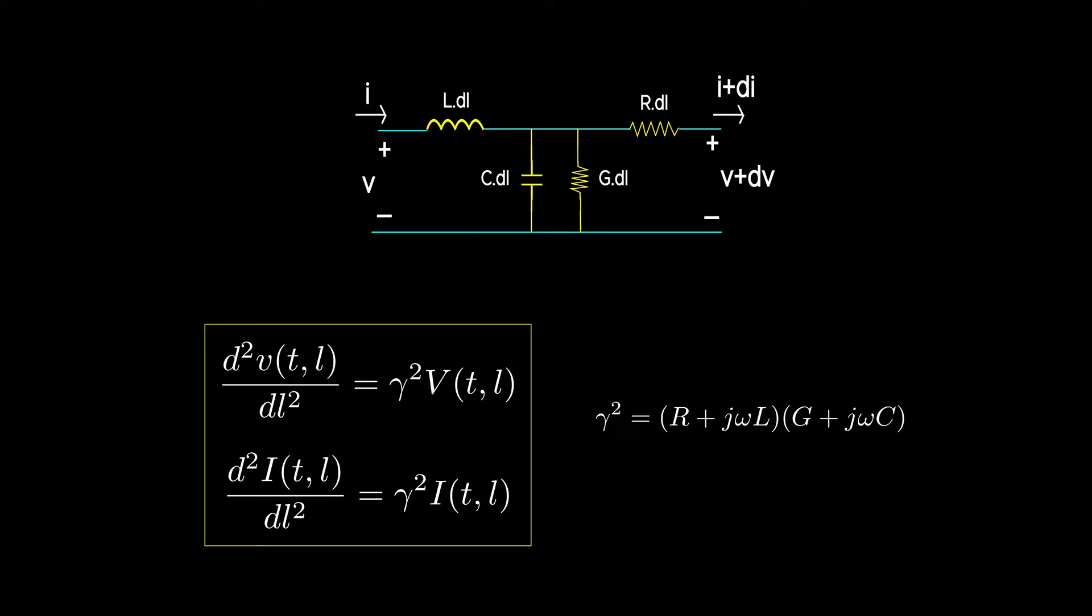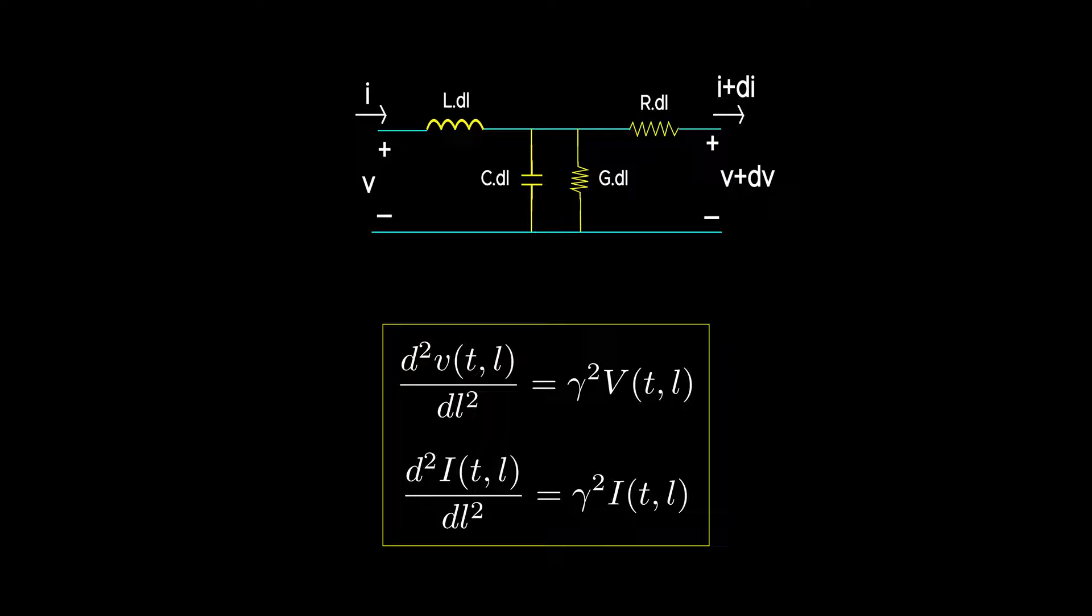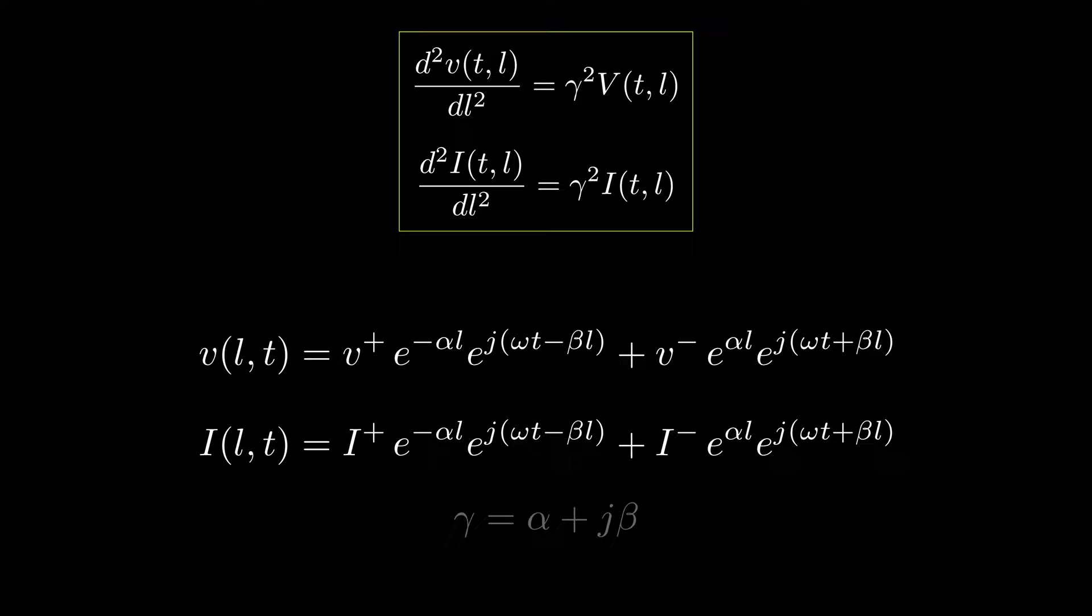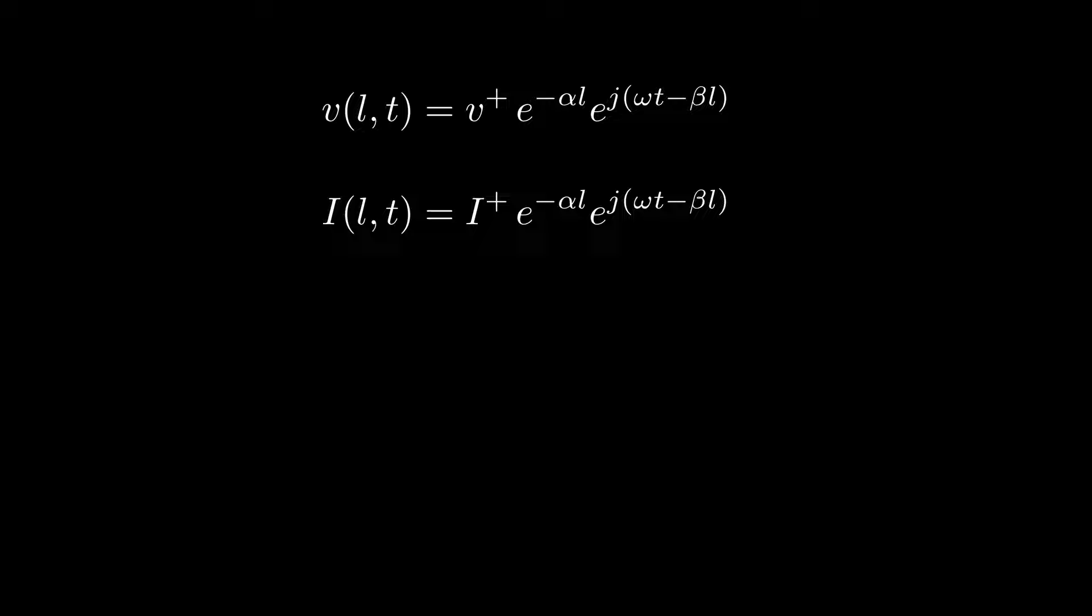Wave equations are simple differential equations telling us that at each point in time, each point in a line has different voltage and current based on its location. If we assume that the voltage and current vary sinusoidally with respect to time, the solution of the wave equations consists of a forward travelling wave and a backward travelling wave, where alpha and beta are the real and imaginary parts of gamma. Let's ignore the backward one. We're going to cover that in a separate video when we talk about reflections.